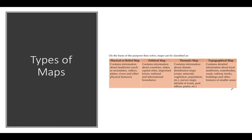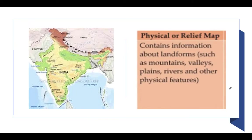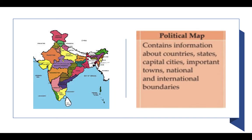There are four types of maps. The first one is the physical map. If any map represents valleys, plains, rivers, or mountains, it is called a physical map.